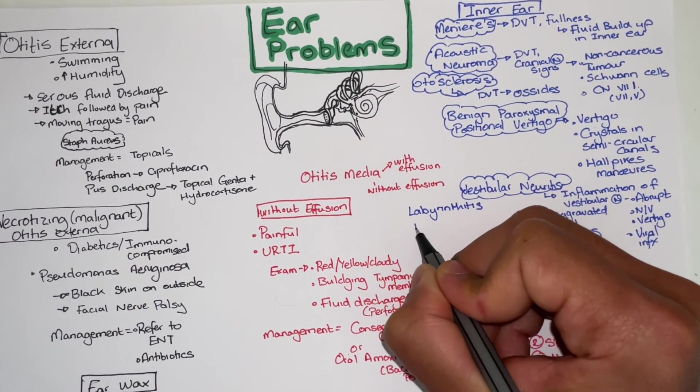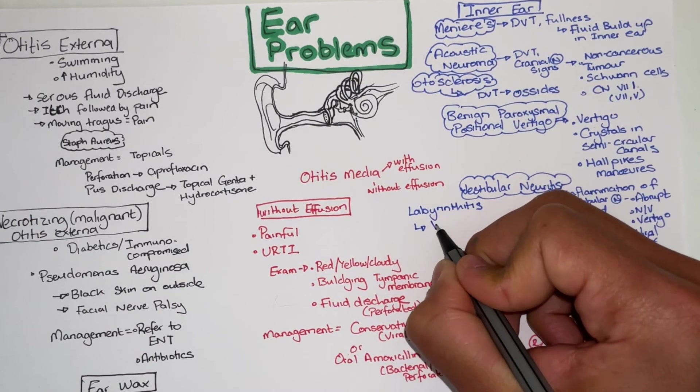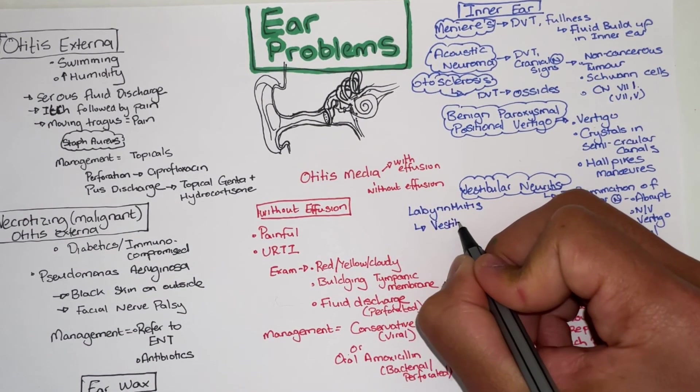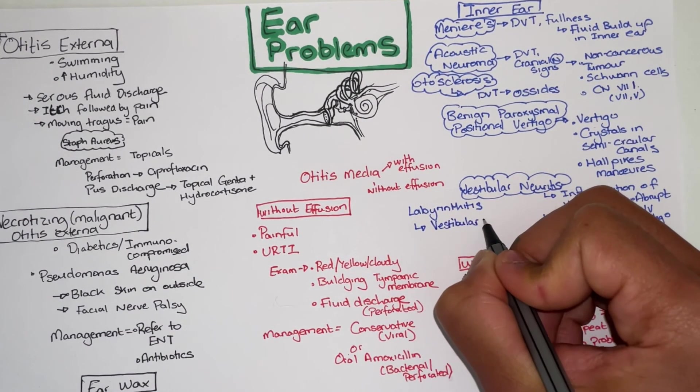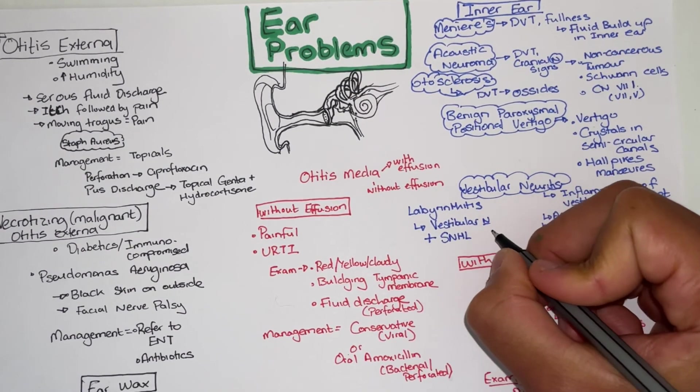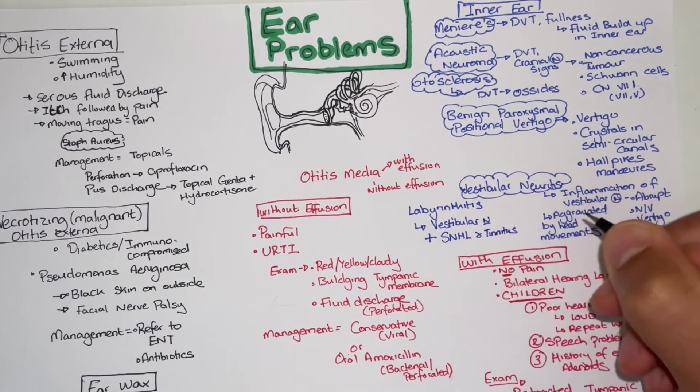Then lastly, labyrinthitis is the inflammation of the vestibular labyrinth and has similar signs to vestibular neuritis but an addition of sensorineural hearing loss together with tinnitus.